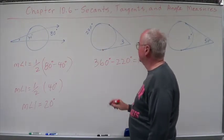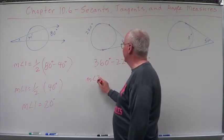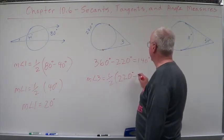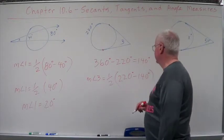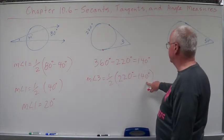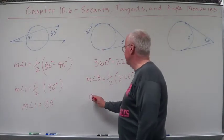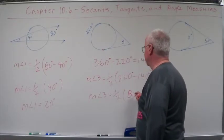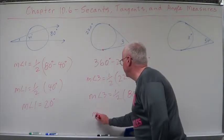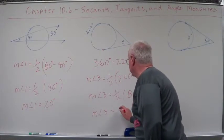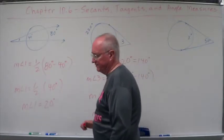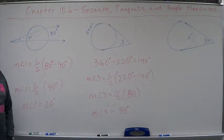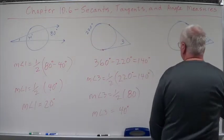So, we're going to take measure angle three equals one half 220 minus 140. What is this? I think it's this. Measure angle three equals one half of 80. So, the measure of angle three is going to equal 40 degrees. Make sure we're doing that one right. Yeah. So the measure of that angle 3 is going to equal 40 degrees.